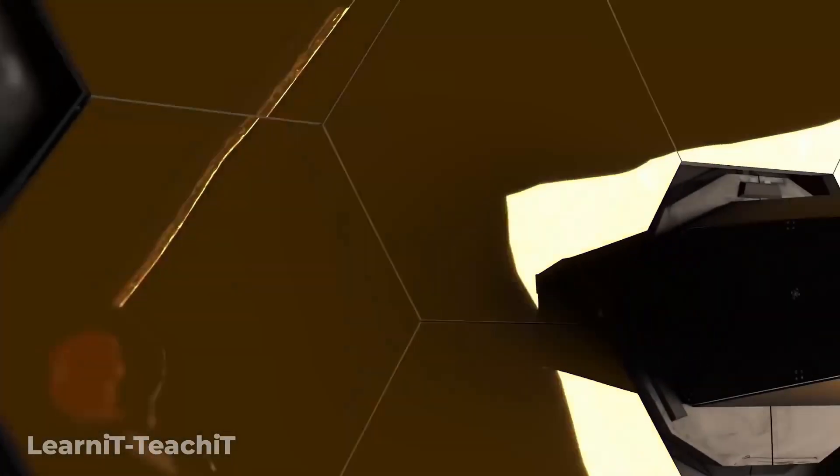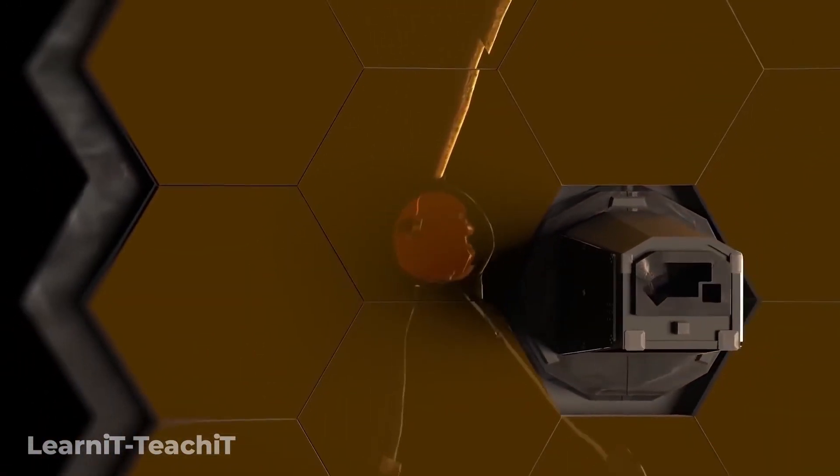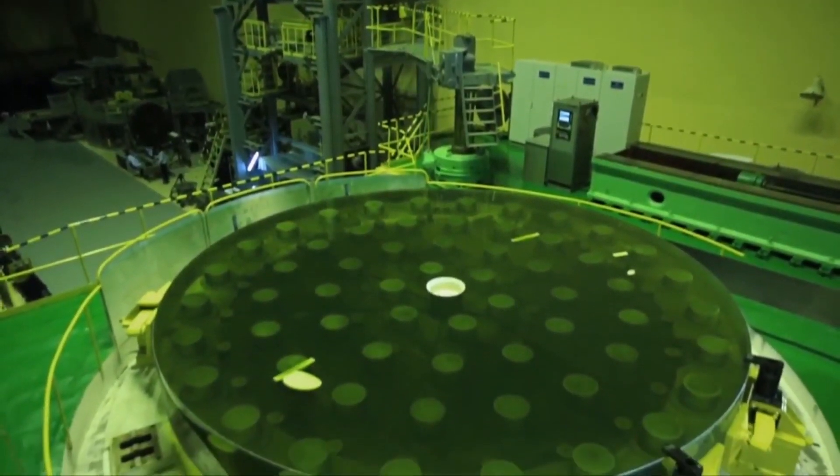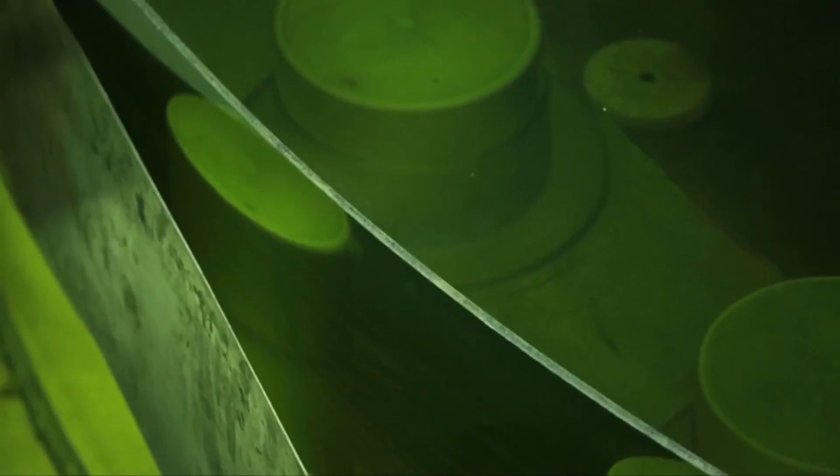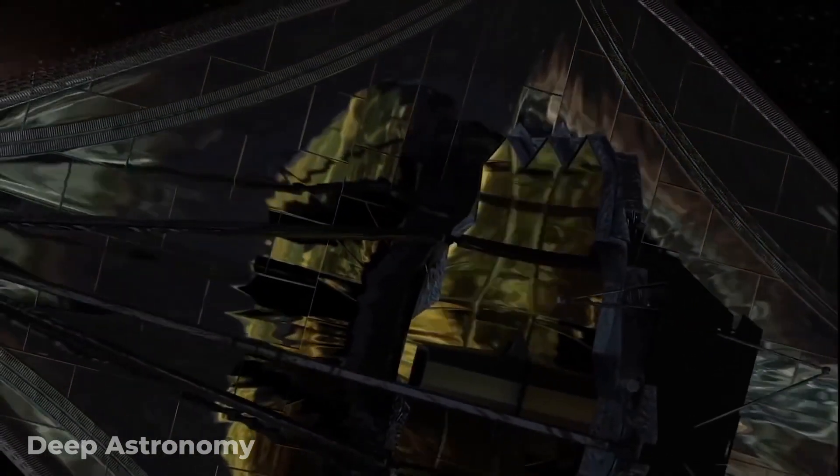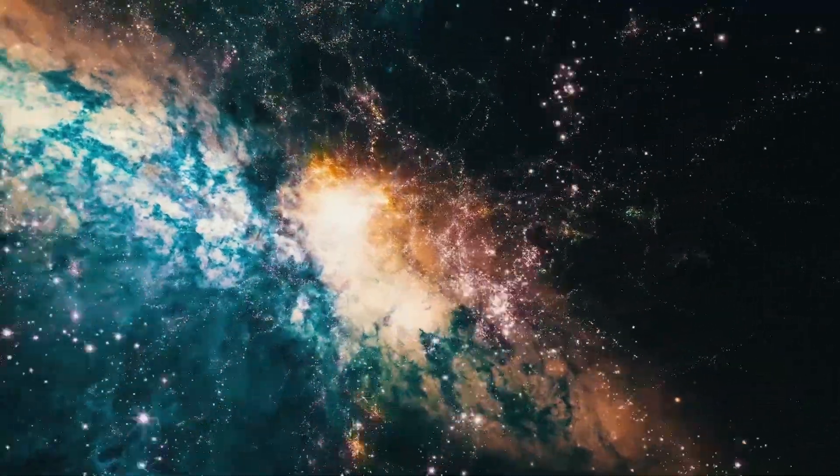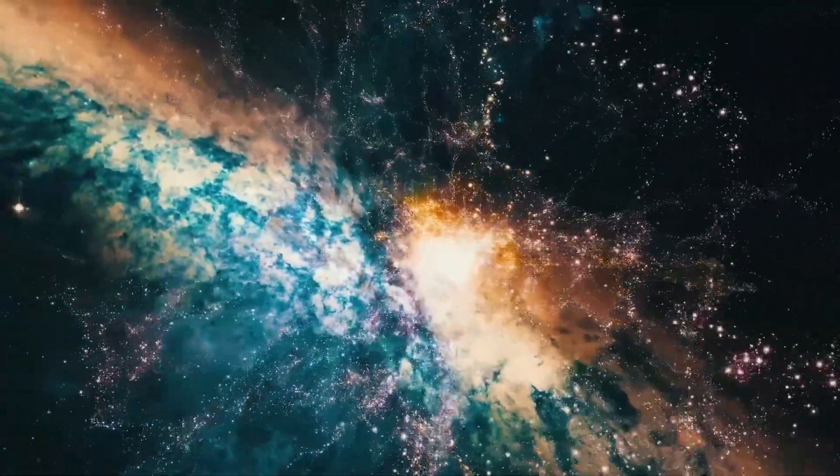So how exactly is the James Webb doing all of this? Well, it all comes down to what NASA considers their secret weapon – a mirror so large that it's even hard to comprehend. The James Webb telescope's mirror is truly unlike anything you've ever seen, and one that can literally show us the deepest reaches of space.